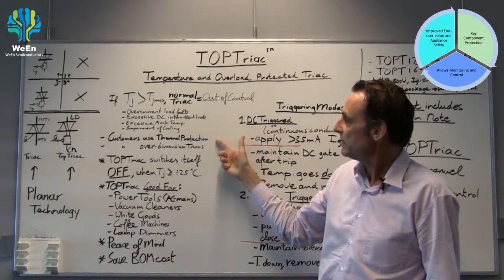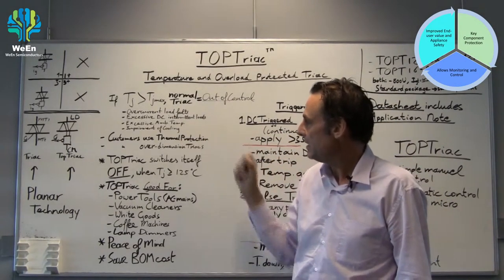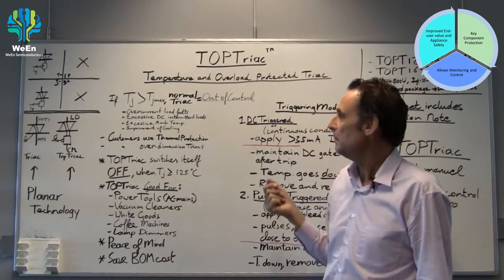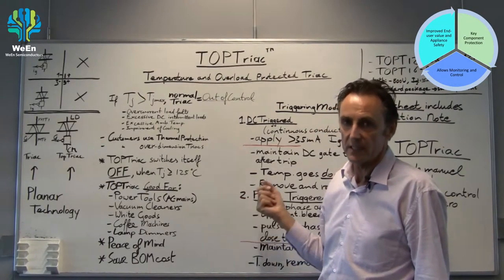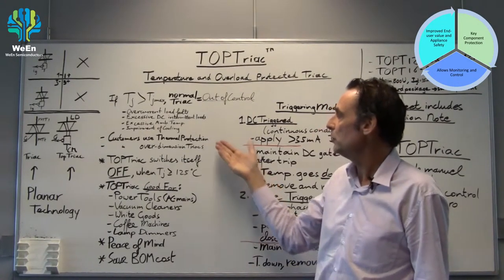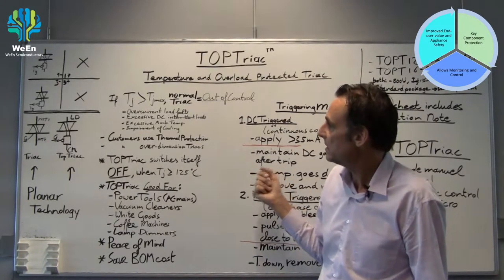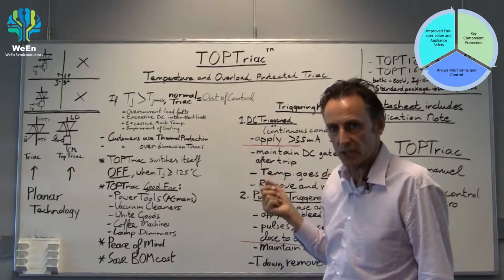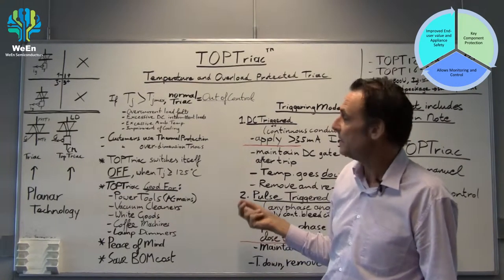So customers want to avoid that situation. They make a thermal protection on their PCB, for instance by measurement of temperature and then a micro switches off the gate signal, or you would have a bi-metallic strip to switch off the whole appliance. Customers also tend to over dimension TRIACs, so they use a 16 amp TRIAC for instance if you need only 8 amp.